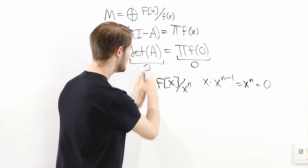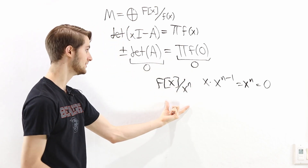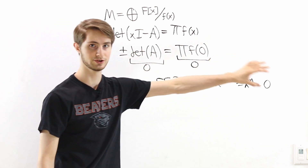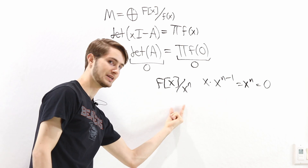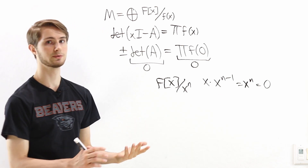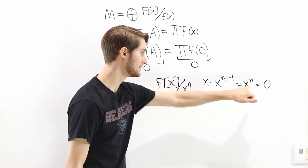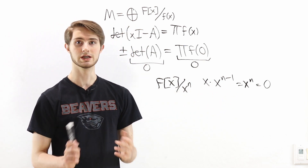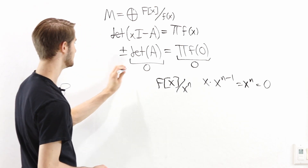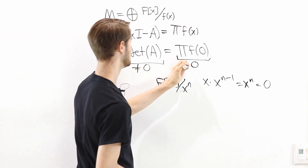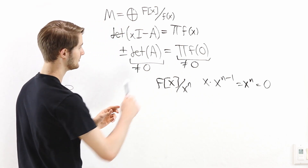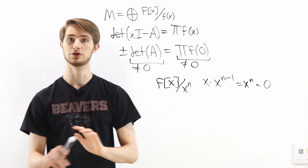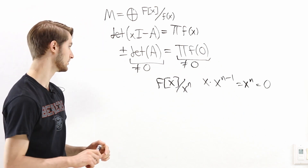We showed this for a single direct summand, but for a direct sum we just put zero in all other components and x^(n−1) in that one component — again giving a non-zero element that maps to zero under multiplication by x, so the matrix is not invertible. Now consider the other direction: what if the determinant is not zero? That means the product of f(0) is not zero, so there are no factors of x in the characteristic polynomial, meaning none of the factors look like x^n alone.